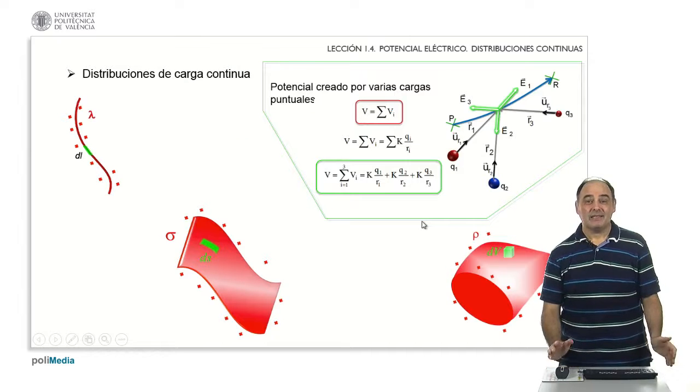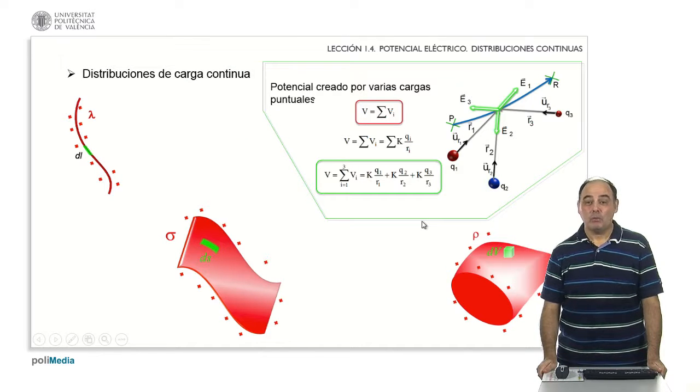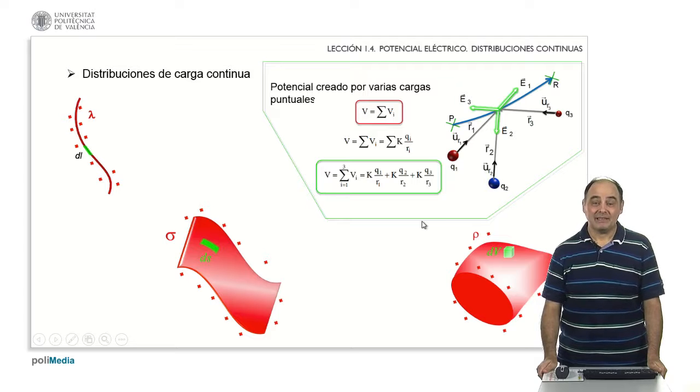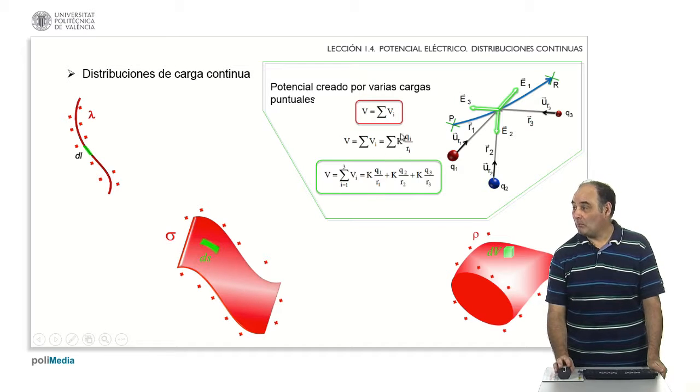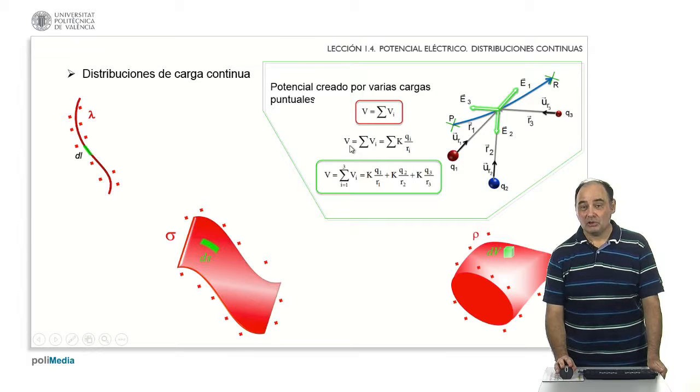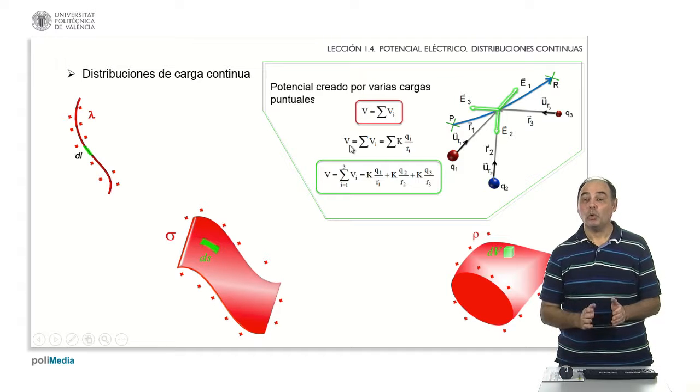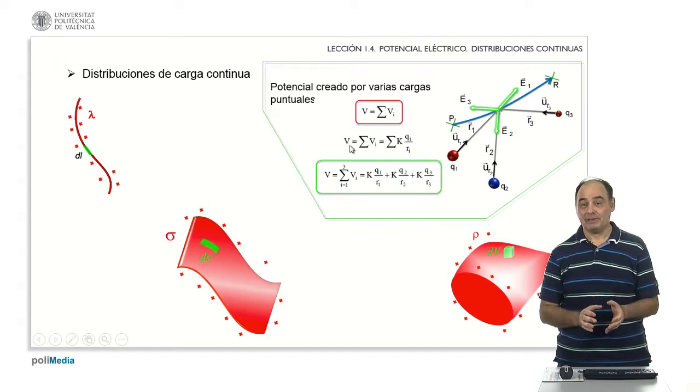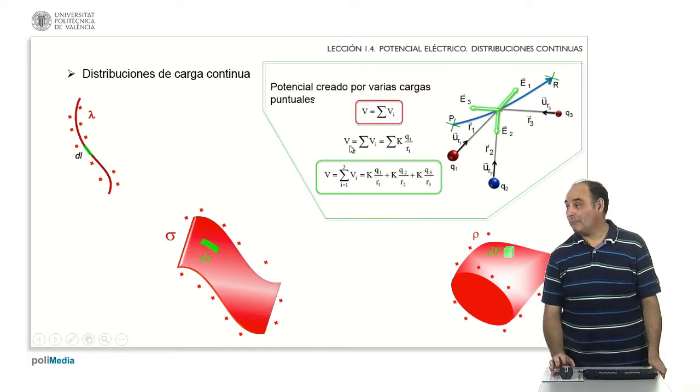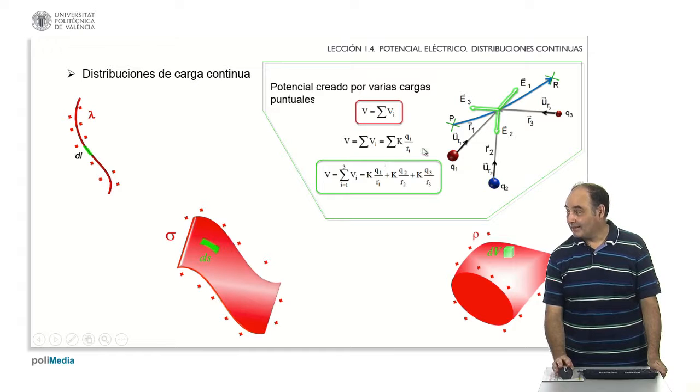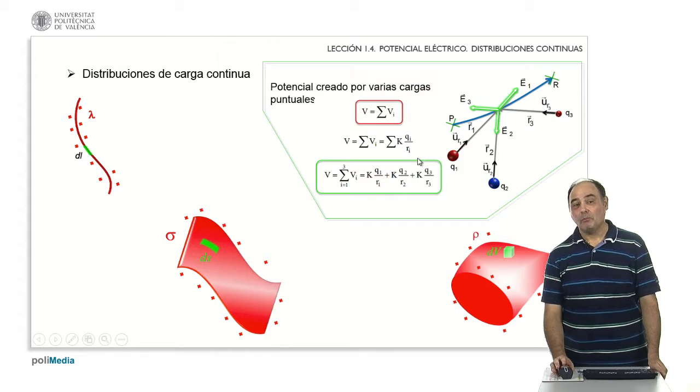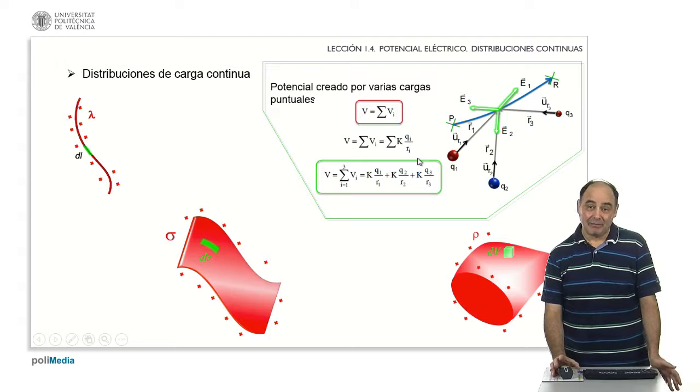What we have to keep in mind is that we know how to calculate the potential created by a set of point charges. It is a question of taking for each one of them what is the potential that it creates in a determined point and to add it for the set to obtain the total potential. This is what we are going to apply to the case of continuous distributions, dividing the continuous distribution in a set of infinite point charges, each of them with an infinitesimal charge. I'll have to get applying the point charge formula. What is the potential created by that equivalent point charge? And then, if there is an infinitesimal value, I will add them all. That is, I will integrate.